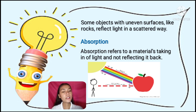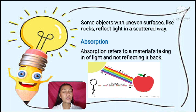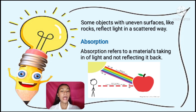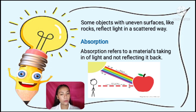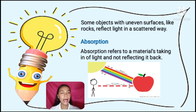Another interaction is absorption. Absorption refers to a material's taking in of light and not reflecting it back. Absorption of light happens when atoms in an object absorb or take in and hold the light waves. For example, you are able to see a red apple because the other light waves are absorbed, but red is reflected to your eyes.